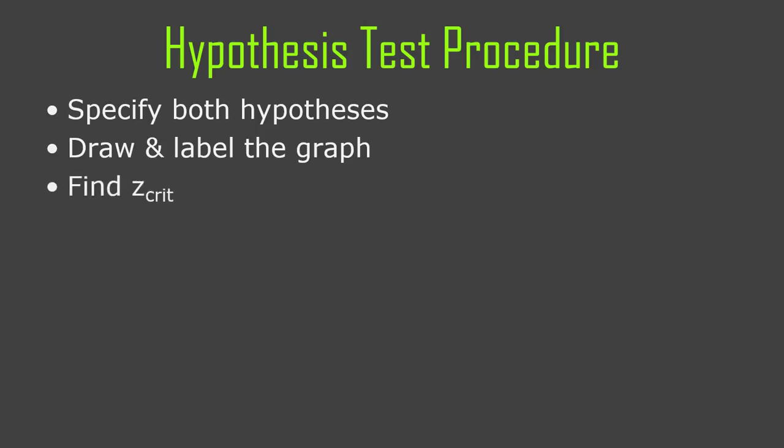If your sampling distribution of the means looks like an upside-down bowl, that's perfectly fine — or like a weird little pyramid, whatever. You draw, you find the critical z value. This is the z value that you have to beat in order to reject the null hypothesis, because you're going to calculate an observed z value. We already saw how to do that.